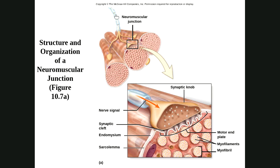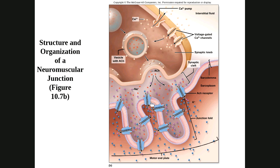Here's an image showing a motor neuron splitting to stimulate three cells — a small motor unit. We can see the synaptic knob blown up, with synaptic vesicles full of acetylcholine inside. When the action potential reaches the synaptic knob, it causes acetylcholine to be released. The acetylcholine travels across the synaptic cleft to the motor end plate, where it binds to receptors and initiates the new action potential on the sarcolemma.